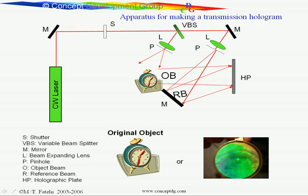The reflected wave from this object has both the amplitude and phase information about every point in this object and travels towards the holographic plate, shown by HP here.